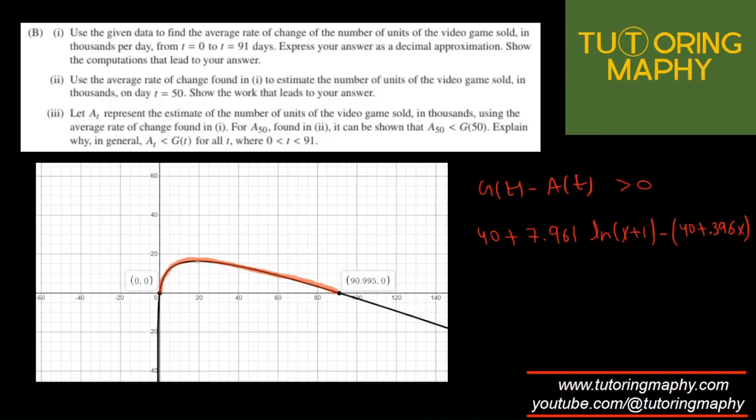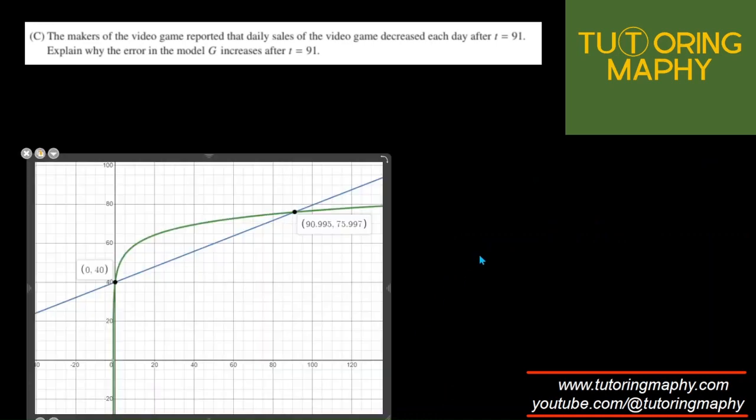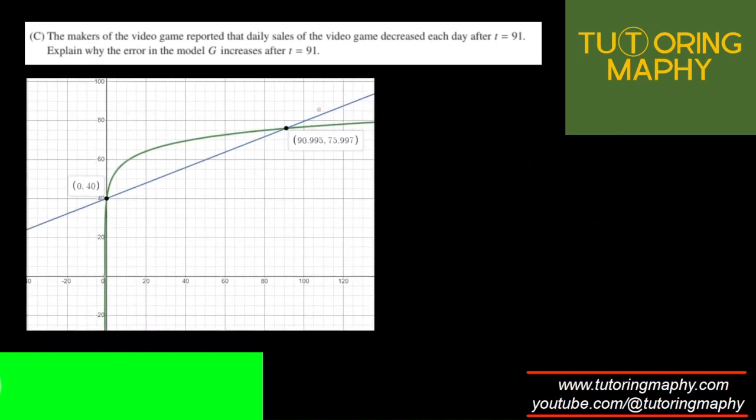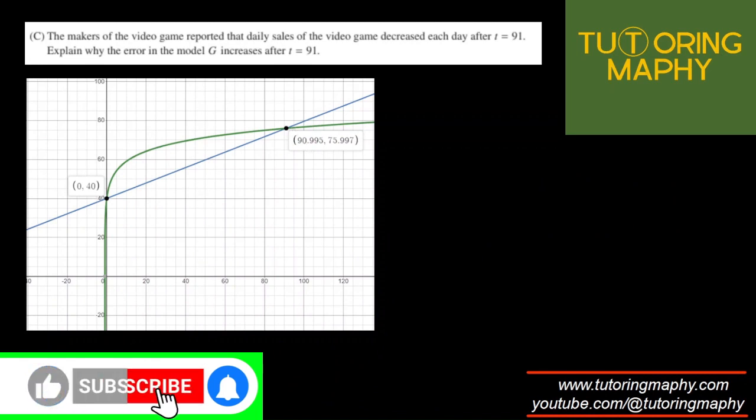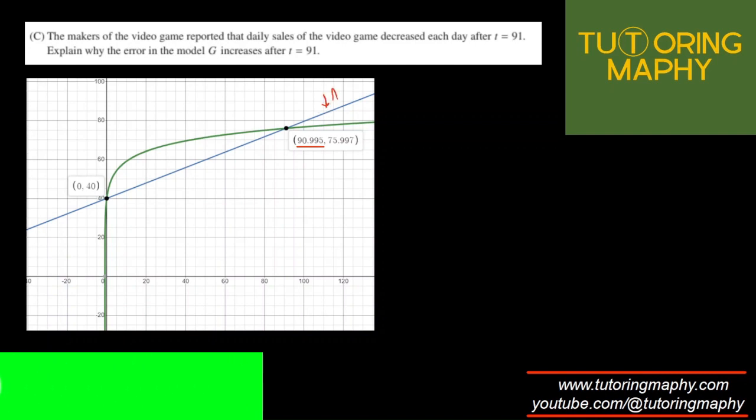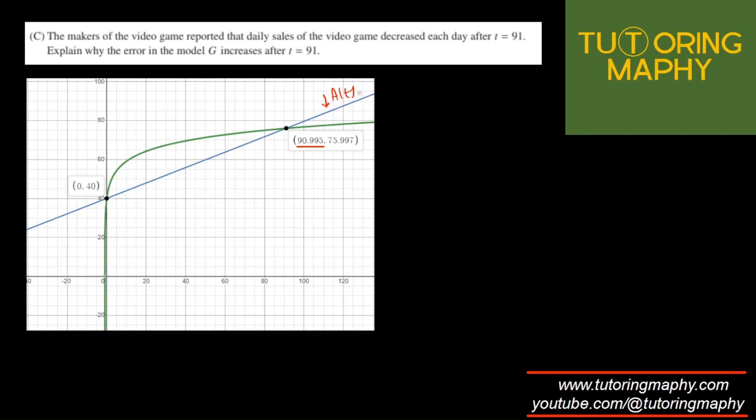The last one is asking us that the makers of the video game reported that daily sales of the video game decreased each day after T equal to 91. Explain why the error in the G model increases after T equal to 91. I think the same curve is going to answer this. So I'm just going to copy and paste it over here. And as we can clearly see that as the value of the time increases from 91, we can clearly see that the rate of change now of A of T becomes, it's constant, but it's relatively greater now than G of T because the rate of change of G now decreases, right, at a faster rate because that's a concave down function.